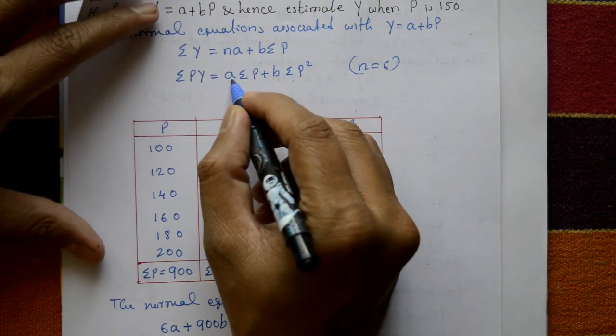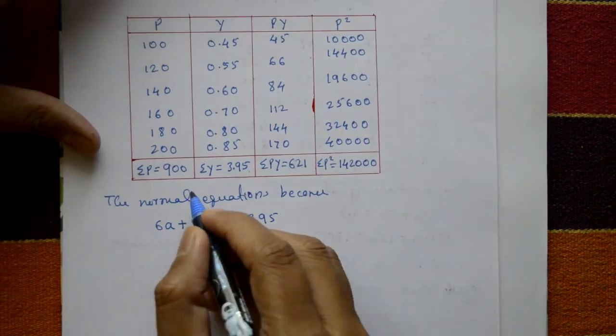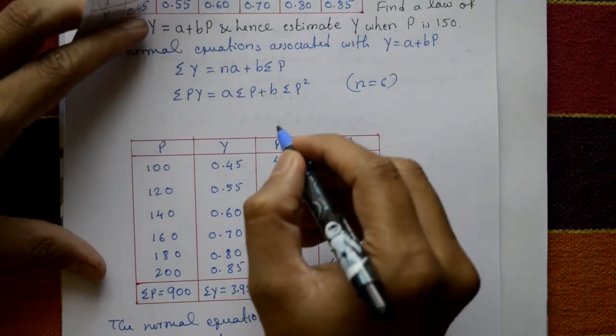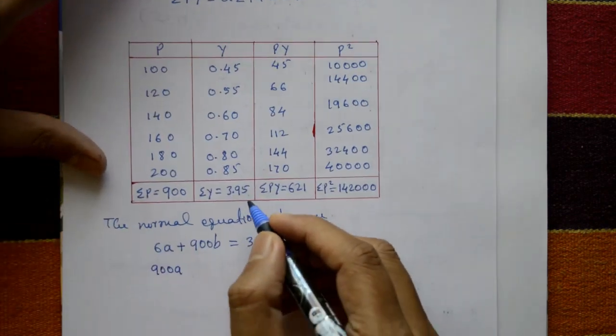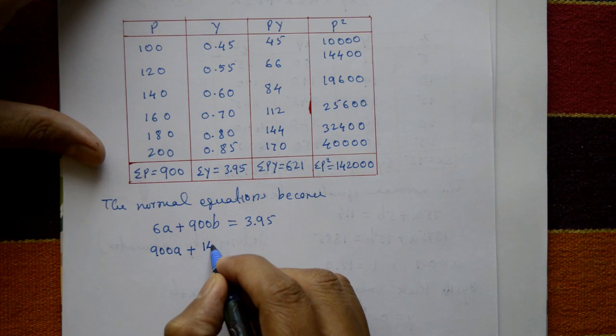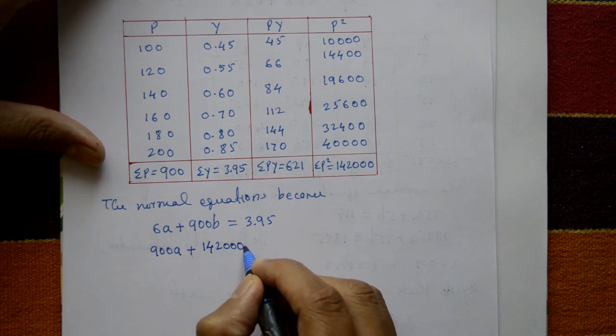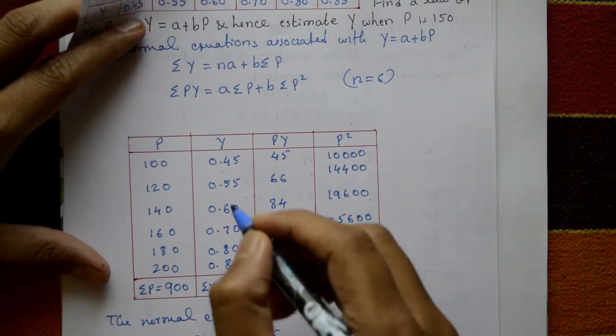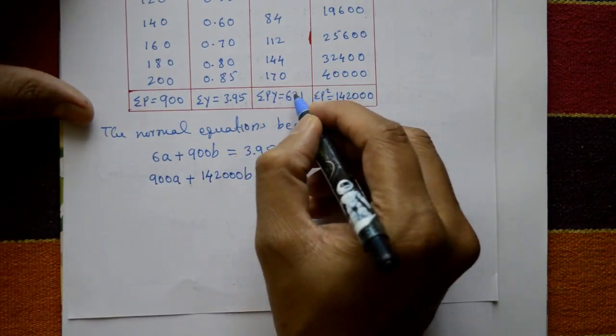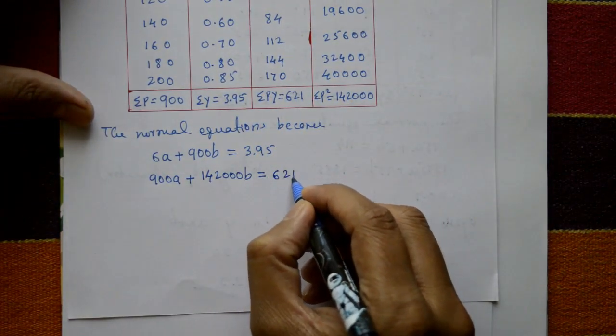Second one: A into summation P, which is 900A, plus B into summation P square, which is 142,000B, is equal to summation PY, which is 621.